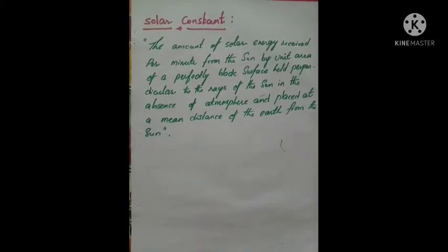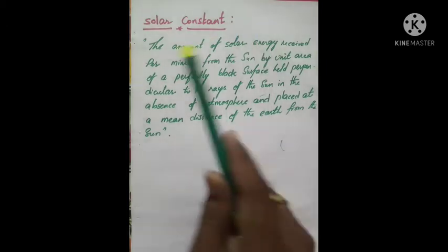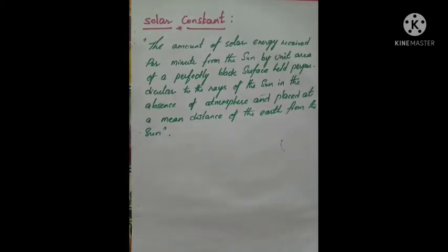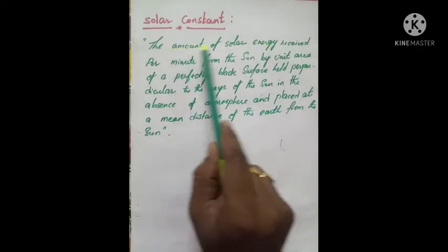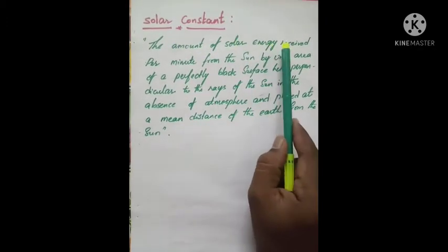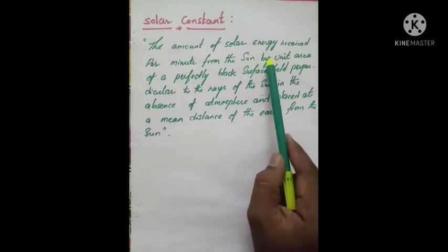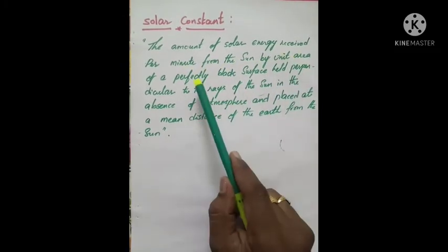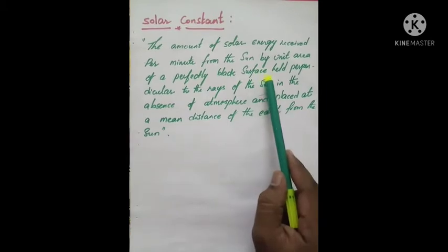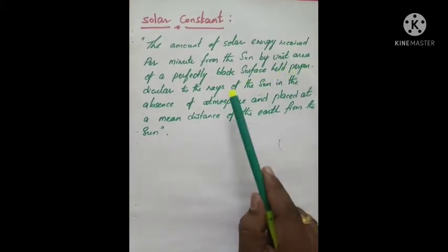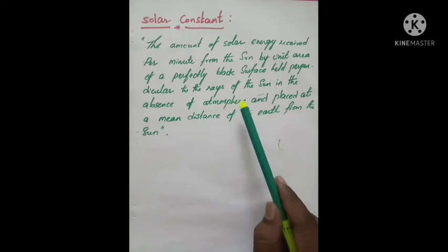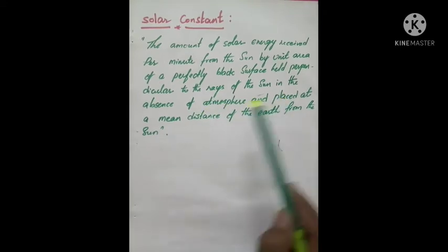Welcome to the session. Today we are going to talk about solar constant. Solar constant means the amount of solar energy received per minute from the sun by unit area of a perfectly black surface held perpendicular to the rays of the sun in the absence of atmosphere.